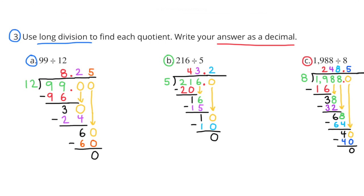C. 1,988 divided by 8. How many times does 8 go into 19? That's twice. So above the 9, I put a 2 in the hundreds place. 2 times 8 is 16, and the difference is 3. I bring down the 8 in the tens column. How many times does 8 go into 38? 4 times. 4 times 8 is 32, and the difference is 6. Then I bring down the 8 in the ones column. How many times does 8 go into 68? It goes in 8 times. 8 times 8 is 64, and the difference is 4. I make sure I put my decimal point in and bring down the 0 in the tenths place. How many times does 8 go into 40? 5 times. 5 times 8 is 40, and the difference is 0. So 1,988 divided by 8 is 248 and 5 tenths.